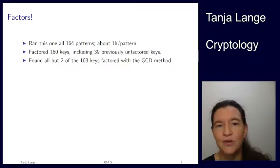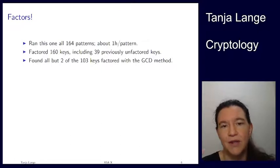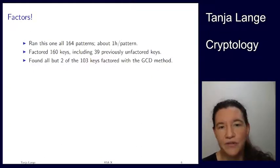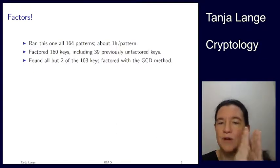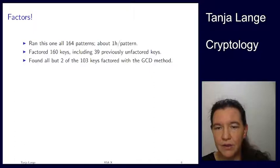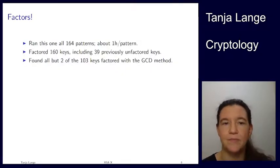We ran this on all of the 164 different bit patterns, and it took about one hour per pattern. We factored 160 keys. That's more than I had before, including there were 39 which were not factored. These again came from patterns that matched these random things, but then more bottom bits were different. From the keys that we had found with the GCD method, we essentially found all of them again. Not a surprise because most of those were really bad primes. There were just two of those keys which had better primes.